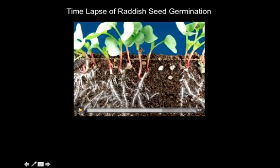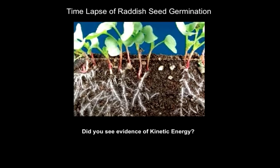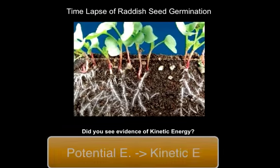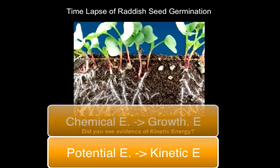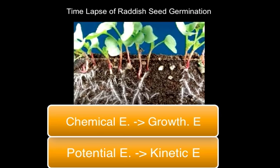Those seeds germinated — you saw some motion, an example of kinetic energy. Where did that energy come from? Organisms can't make energy; it has to come from somewhere. All of that kinetic energy came from potential energy — the potential energy that was stored inside the seeds. Each seed has some food stored with it, chemical energy that is potential energy. When the seed germinates, it converts it into kinetic energy of growth, movement, and development.